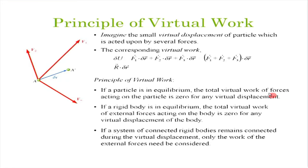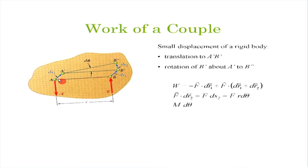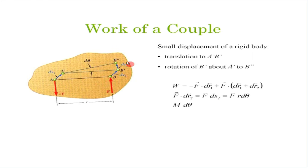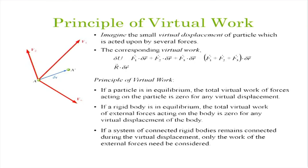This principle can be extended to rigid bodies: if a rigid body is in equilibrium, the total virtual work of external forces is zero for any virtual displacement of the body. For a rigid body, rotations are also possible in addition to translations. The work done for translation is F·dr. For virtual rotations, the virtual work corresponding to a virtual rotation δθ is M times δθ, where M is the moment or couple acting on the body.